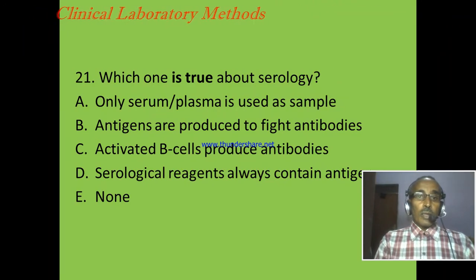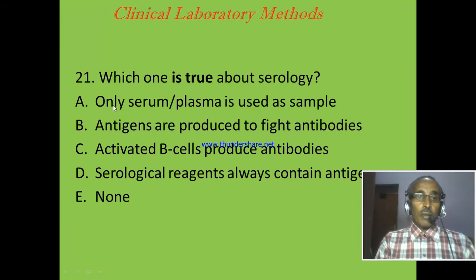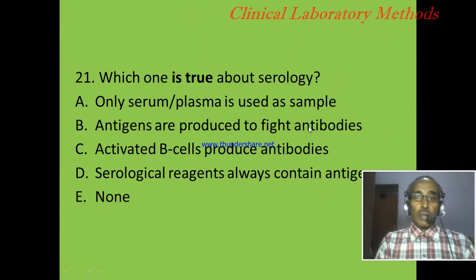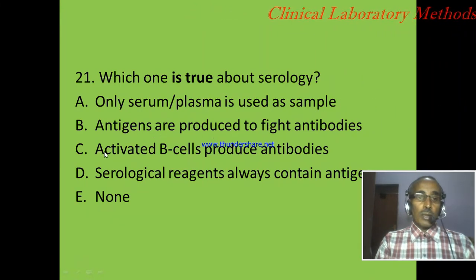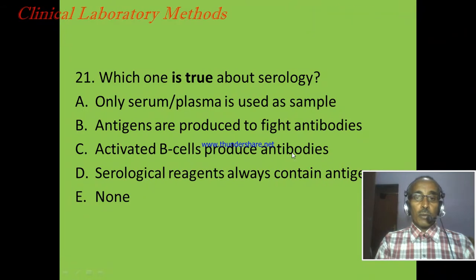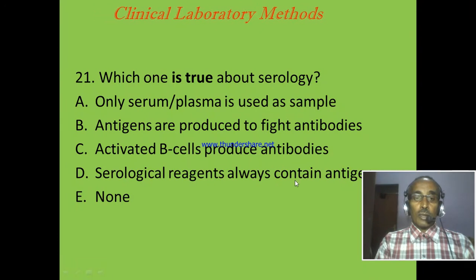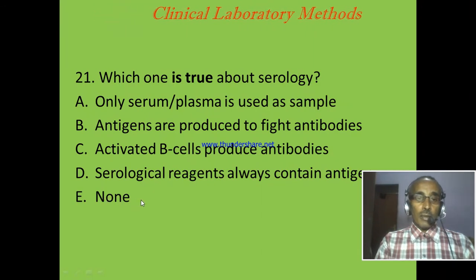Question 21: Which one is true about serology? A: Only serum or plasma is used as sample. B: Antigens are produced to fight antibodies. C: Activated B cells produce antibodies. D: Serological reagents always contain antigen. E: None.